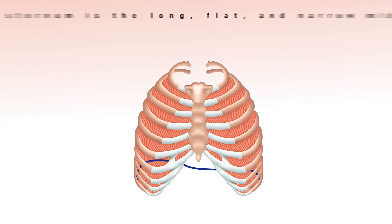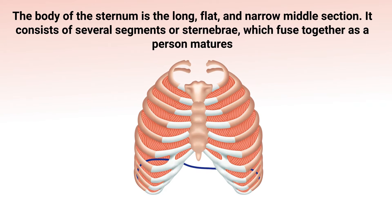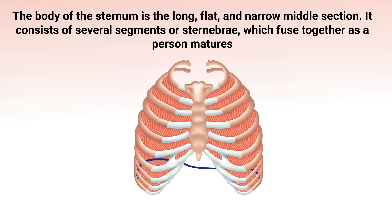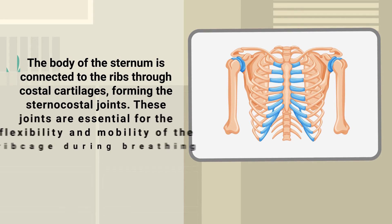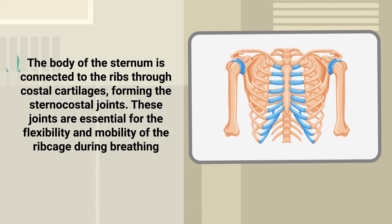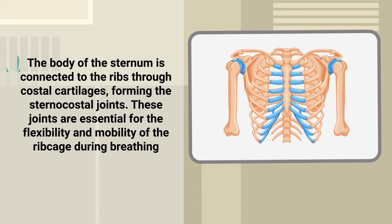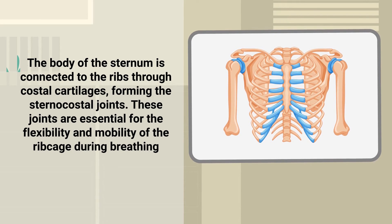The body of the sternum is the long, flat, and narrow middle section. It consists of several segments which fuse together as a person matures. The body of the sternum is connected to the ribs through costal cartilages, forming the sternocostal joints. These joints are essential for the flexibility and mobility of the ribcage during breathing.